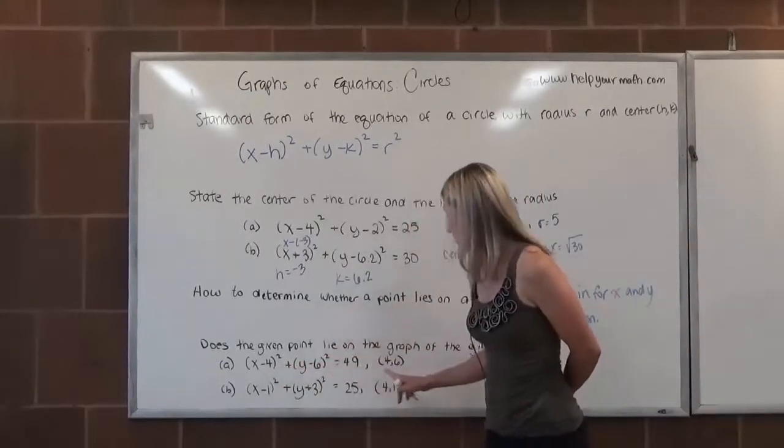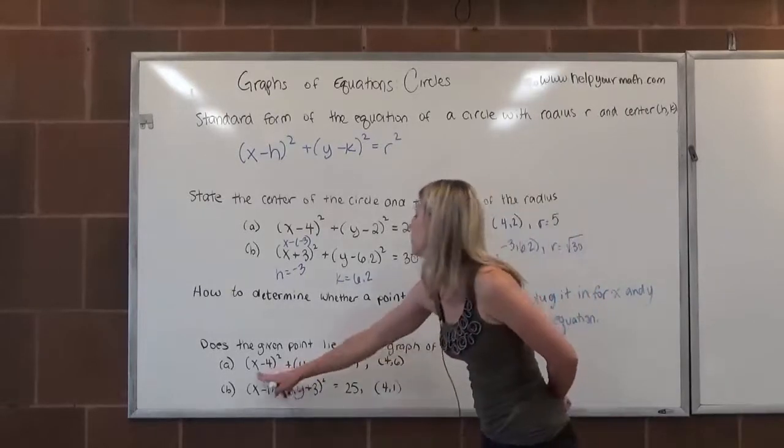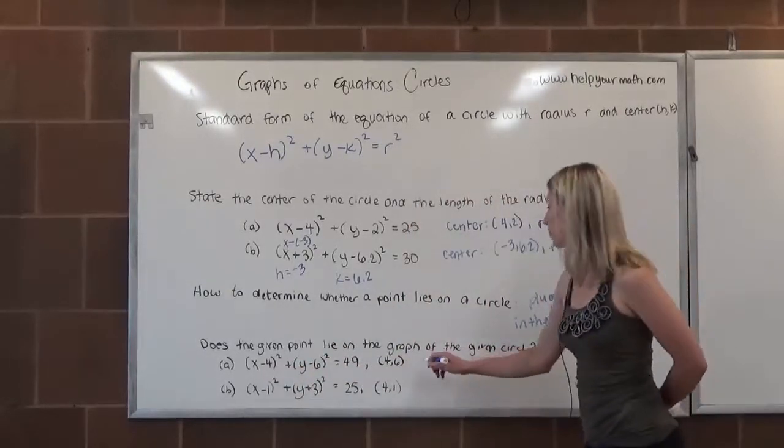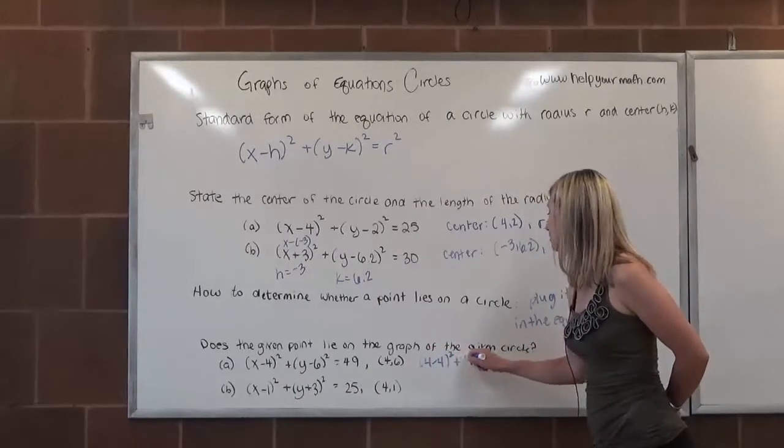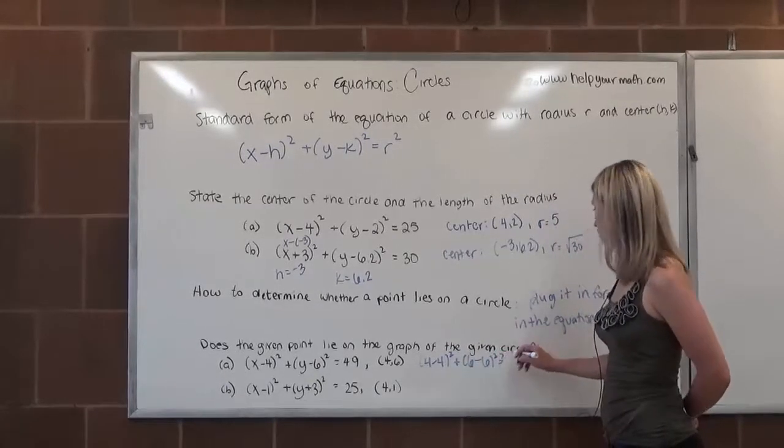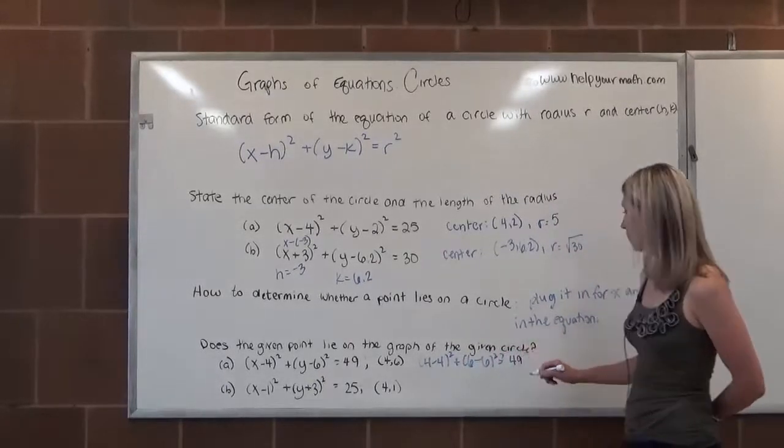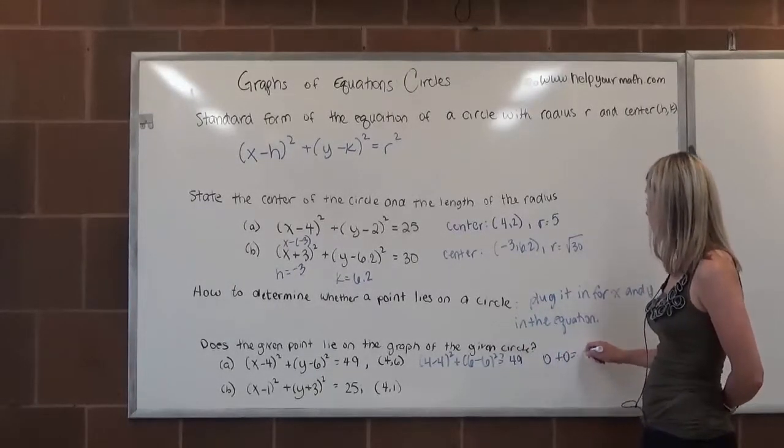So we're given the circle first, and then we're given the point second. So we're going to plug in 4 and 6 for x and y respectively and see if it works. So (4 - 4)² + (6 - 6)² — does that equal 49? Well, 4 minus 4 is 0. 6 minus 6 is 0.